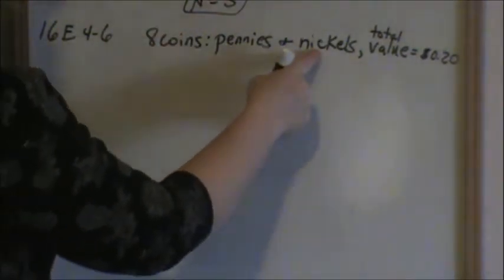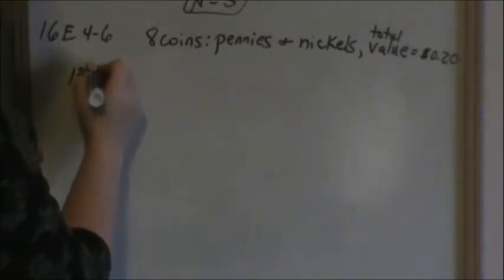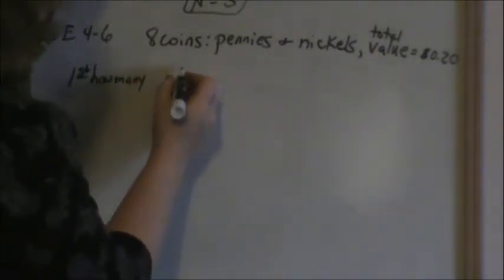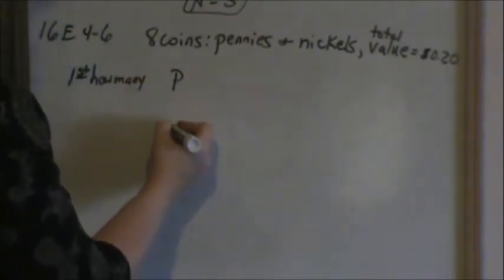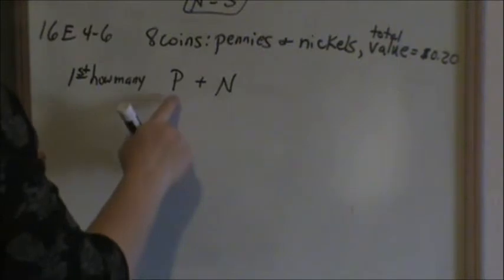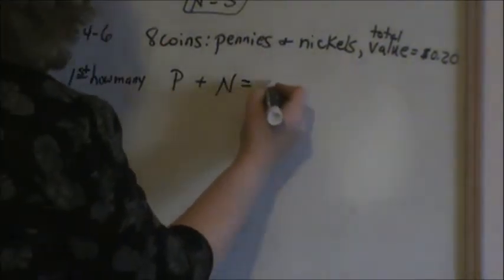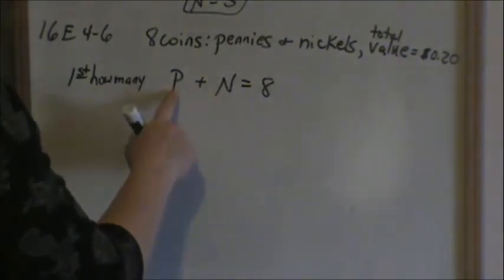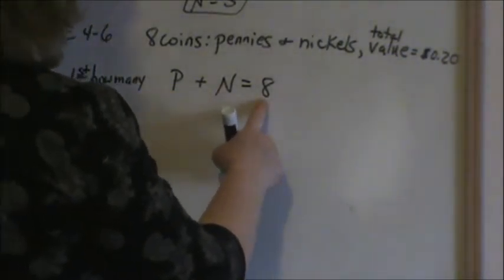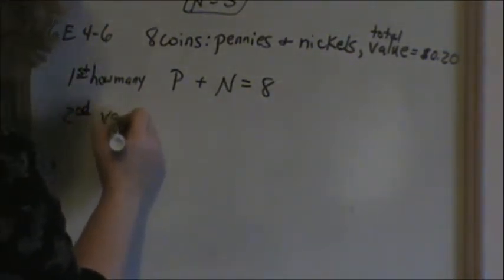Since we have two unknowns, we have to have two equations. My first equation is going to be how many coins. I don't know how many pennies I have, so I'll put P. I don't know how many nickels I have, so I'll put N. But when you add the number of coins together, you get a total of 8 coins. So: the number of pennies plus the number of nickels equals 8.